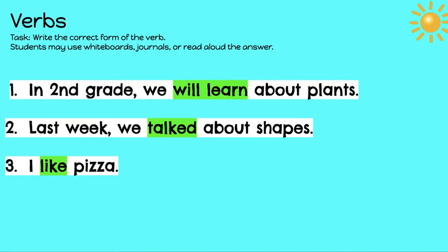So let's read them with the correct verb tense. Number one: In second grade, we will learn about plants. Number two: Last week, we talked about shapes. And number three: I like pizza. All right friends, I will let you go. I will talk to you guys again on Monday — I think today's Friday. Also, friends, I have to go because I have a new puppy to take care of. Maybe I will show you guys on Dojo a picture of my new puppy — I'm still trying to figure out his name. He's so cute. He kind of looks like Coco and Minnie but he's a little bit chubbier. I'll show you a picture of him later. All right friends, I will talk to you soon. Have a great Monday. Listen to your parents.